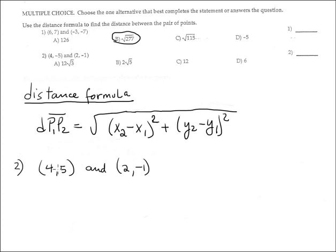Number 2 is using the distance formula to find the distance between the points. The points are (4, -5) and (2, -1). I'll call (4, -5) as X1, Y1, and (2, -1) as X2, Y2.